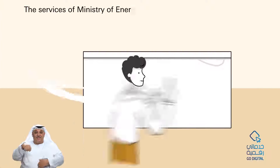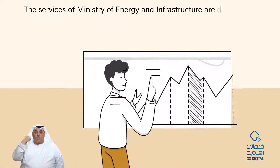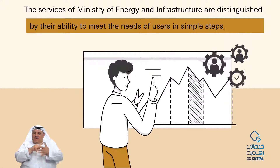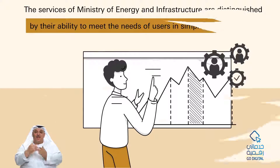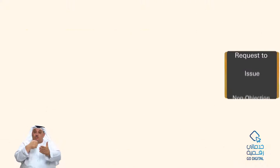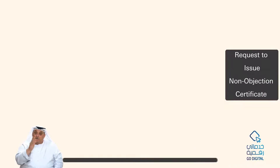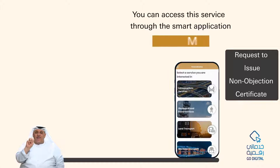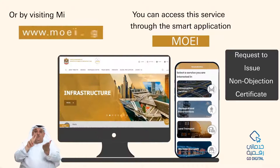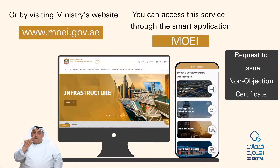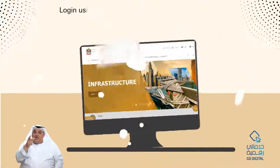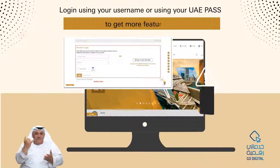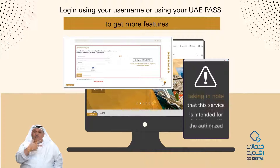The services of the Ministry of Energy and Infrastructure are distinguished by their ability to meet the needs of users in simple steps, including the request to issue a Non-Objection Certificate. You can access this service through the smart application MOEI or by visiting the ministry's website. Login using your username or using your UAE Pass to get more features.